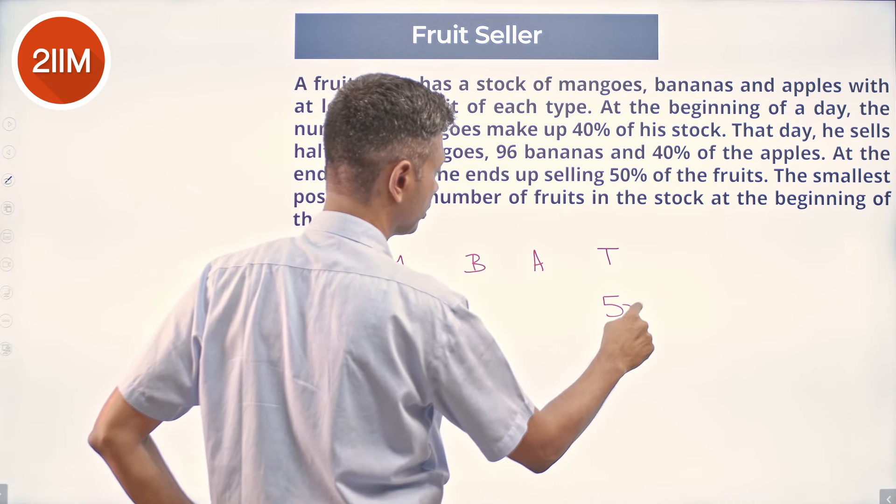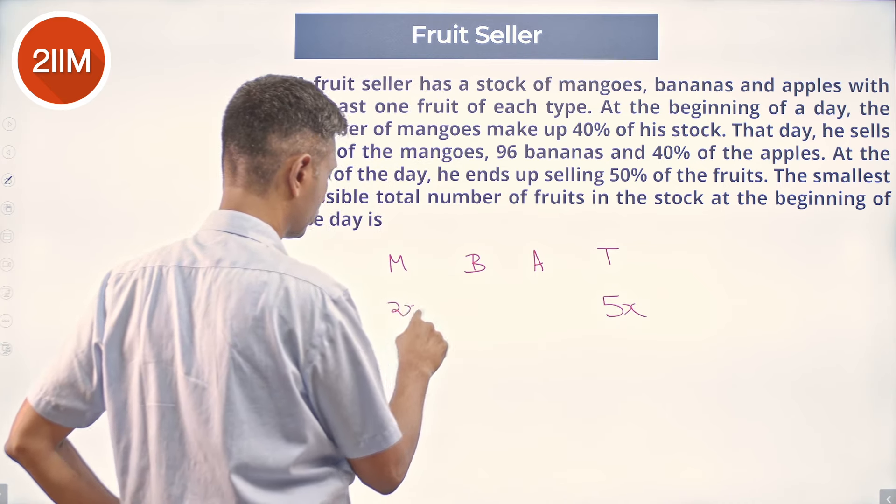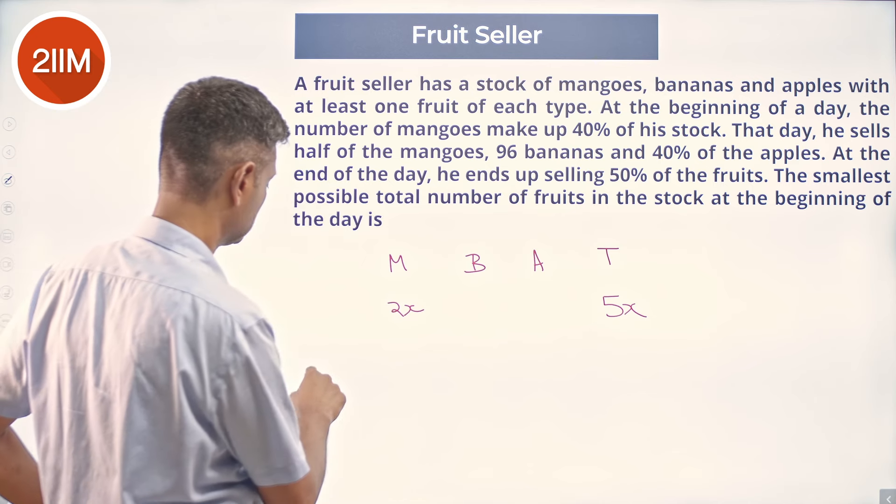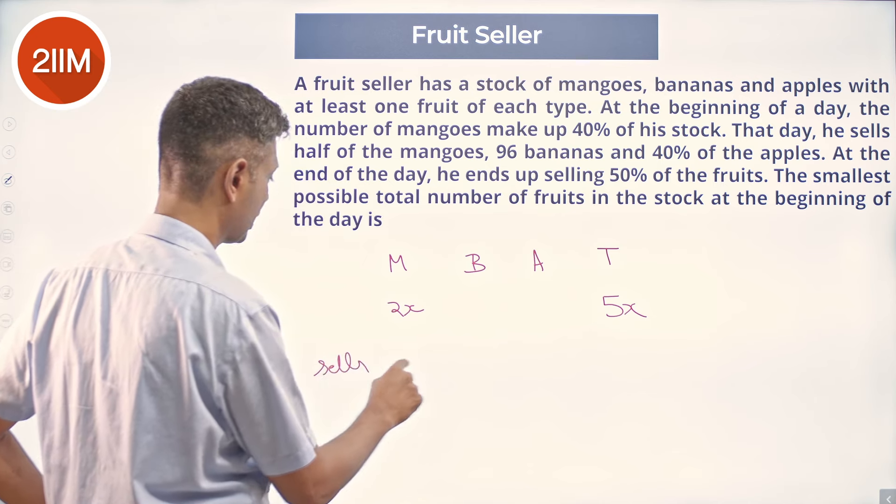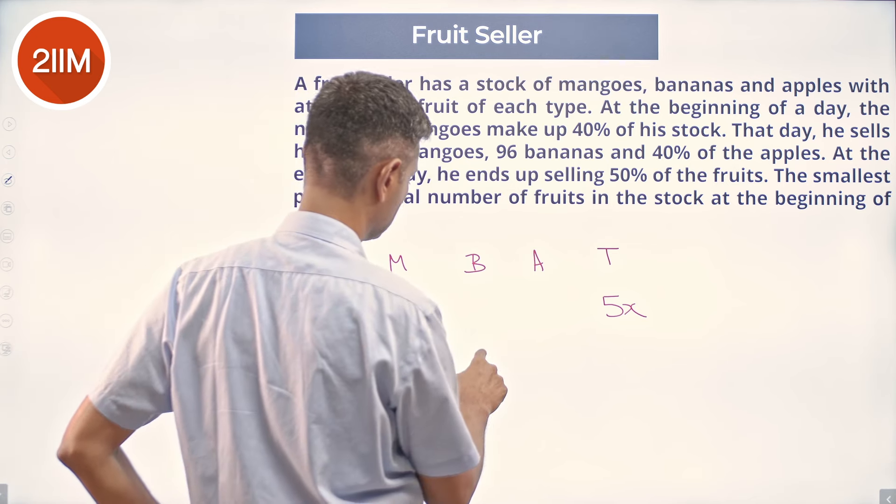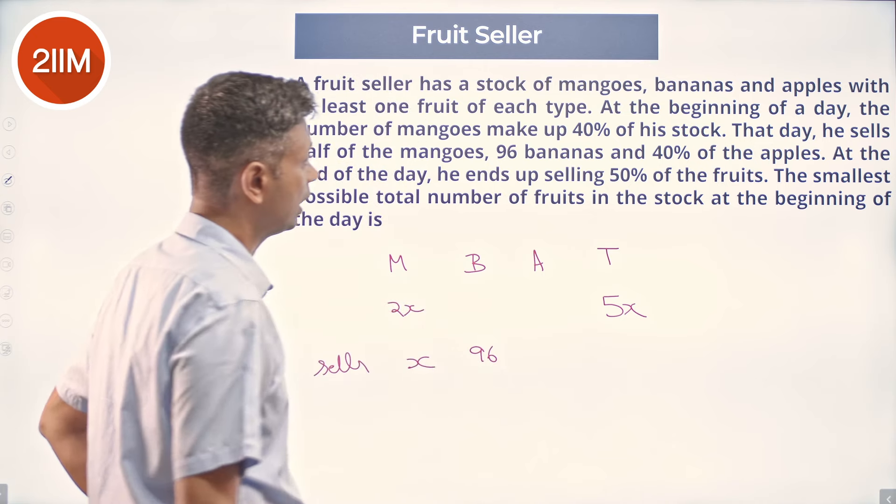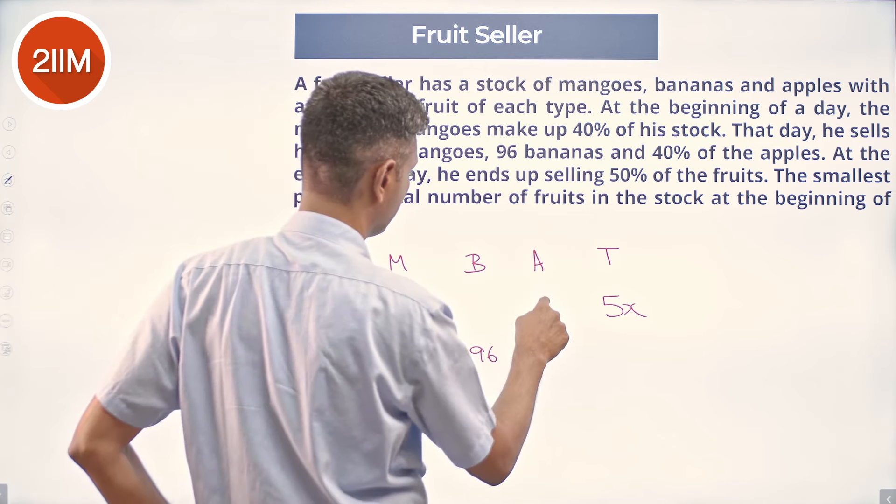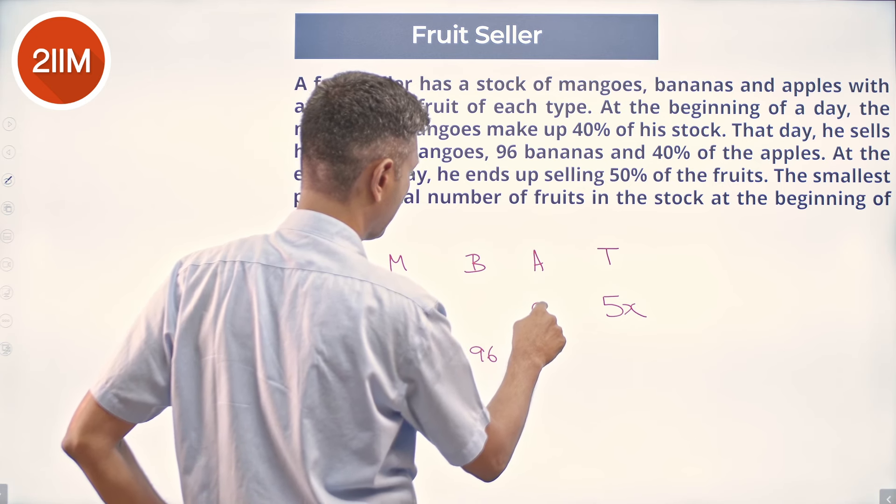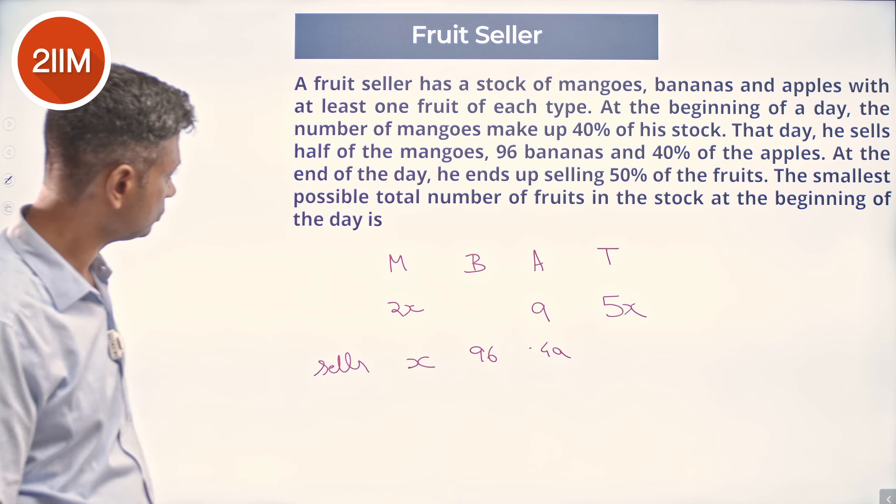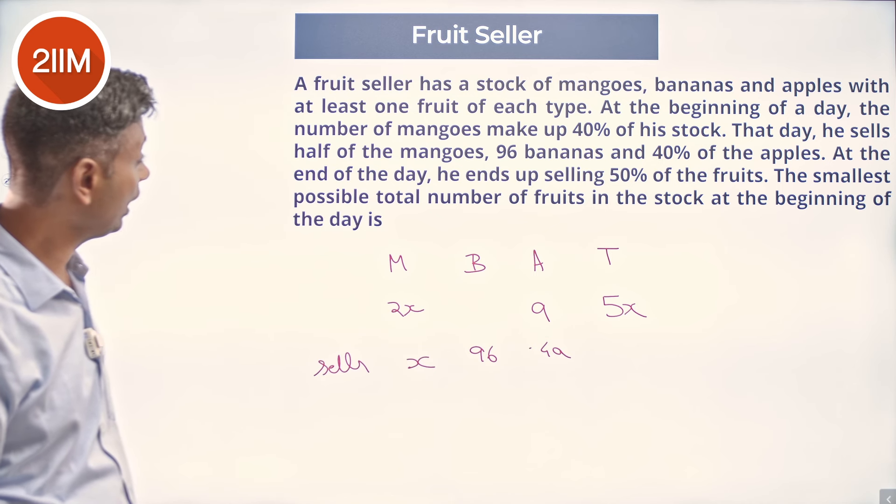If total is 5x, he has 2x mangoes. That day he sells half the mangoes, so he sells x. He sells 96 bananas and 40% of the apples. Let's say apples is a, 0.4a at the end of the day.